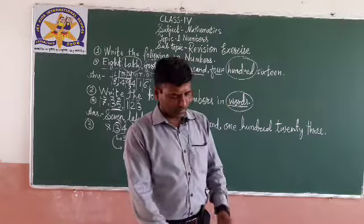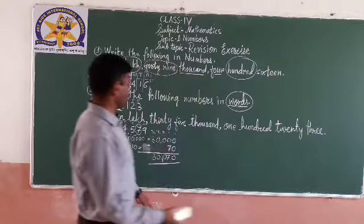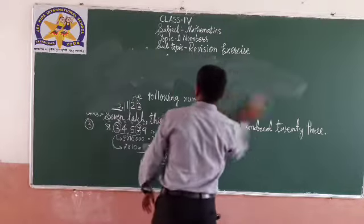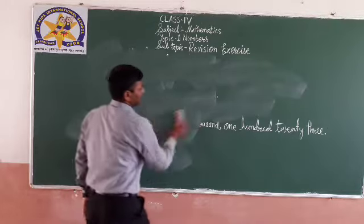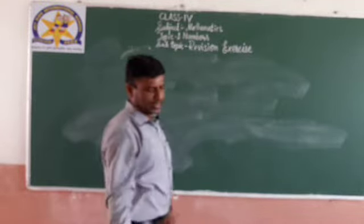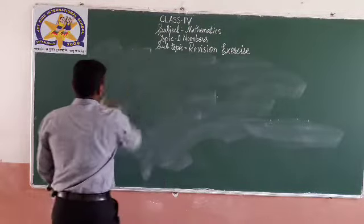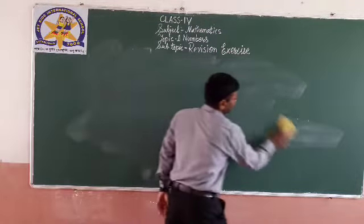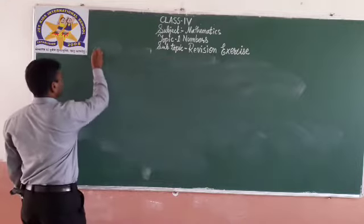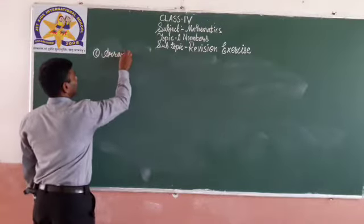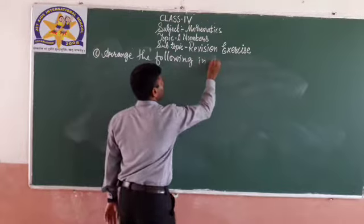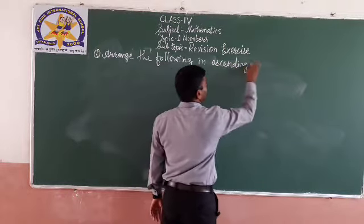Then arrange the following in ascending and descending order. I will solve one. I will tell you how to solve — I already mentioned ascending and descending order in the previous video, but here again I will revise. Arrange the following in ascending order — question number 6.